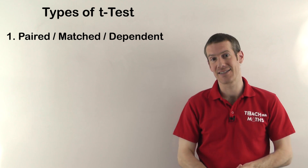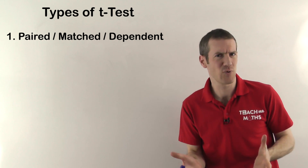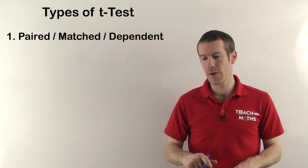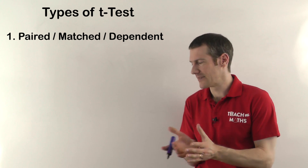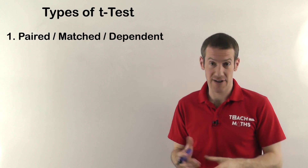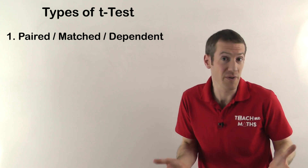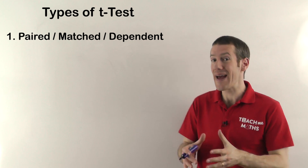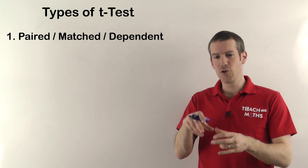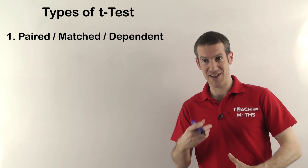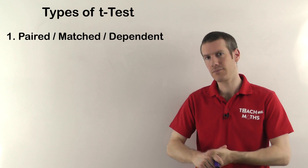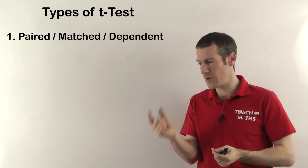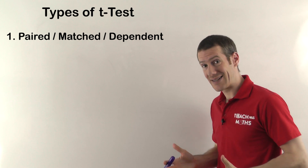First up, the first kind of t-test is a paired — sometimes called matched or dependent — test. It's when you've got paired, matched, or dependent data. For example, imagine you've got a set of patients and you want to test a new drug. You measure their cholesterol levels before you give them the drug, then you give them the drug which is supposed to reduce their cholesterol, and then you measure their cholesterol levels after. That would be a paired or matched or dependent t-test, because the before and after situations are dependent — you've got the same patient before and after taking the drug, and the data is naturally paired with a before and after for each patient.